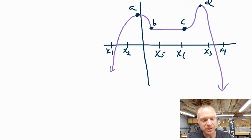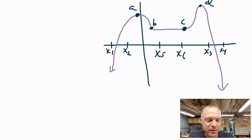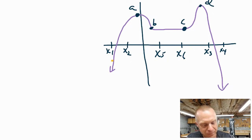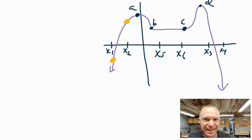Look at this graph I've created here. It's kind of a special graph — it seems to go up and down, and there's even a space in the middle where it appears to be flat. I want to look at some points along this graph with you. On the left-hand side, we can see points that are each associated with these x values.